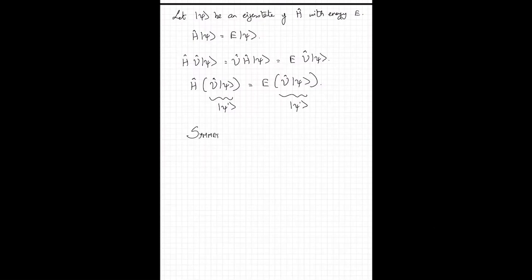Symmetry in quantum mechanics necessarily implies degeneracy. If you have a symmetry in a quantum mechanical system, it means there is a whole bunch of states connected by the symmetry transformation that all have the exact same energy E.